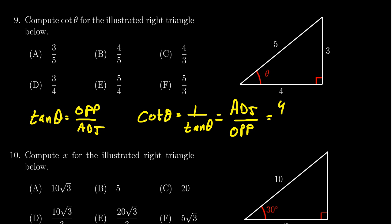The adjacent side is four, the opposite side is three. So the correct answer for tangent of theta would be choice C, which is four thirds.